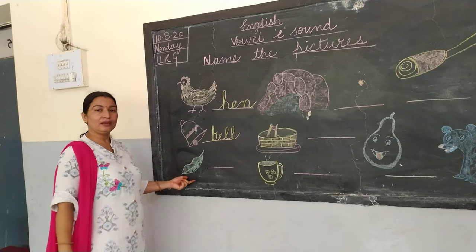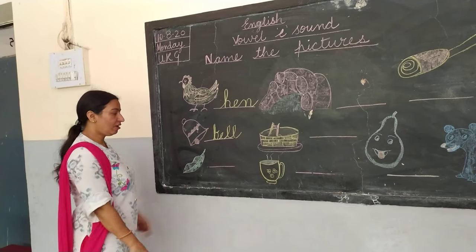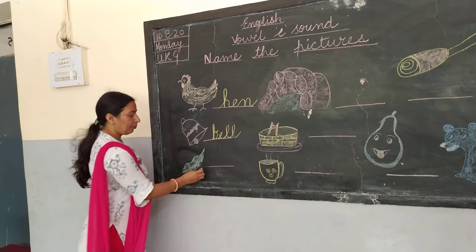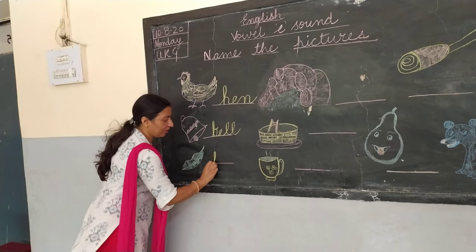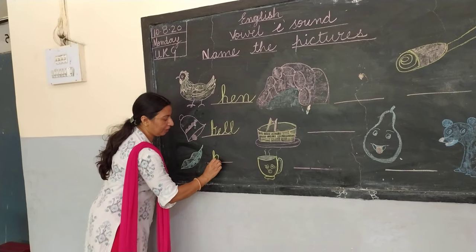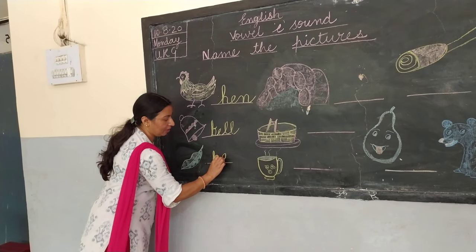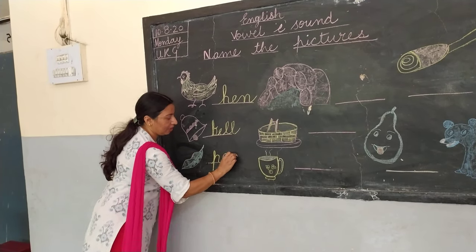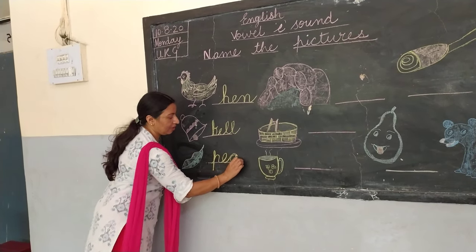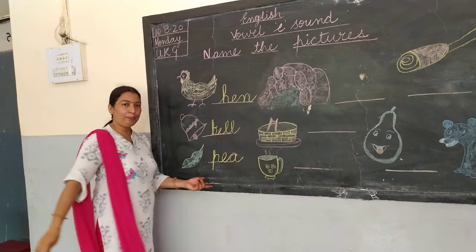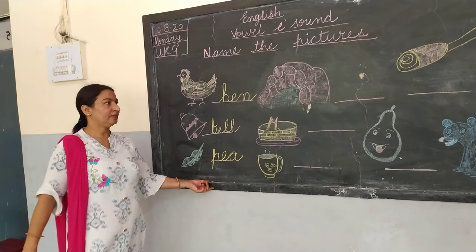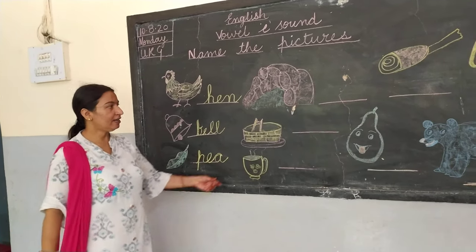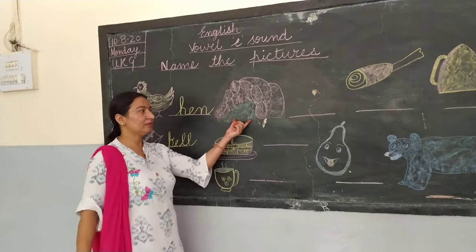Now see this picture — it is a picture of pea. So what is the spelling of pea? P-E-A, pea.